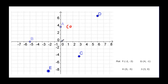For point A, we didn't go left or right so x is zero, and then we moved up four units in the y direction, so point A is (0, 4). For point B, we start at the origin and count five units to the left, which gives us negative five in the x direction, and we didn't move up or down so that's zero in the y direction.